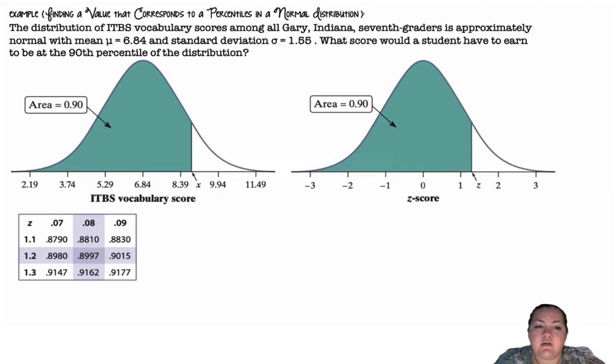Alright, so finding the value that corresponds to a percentile in a normal distribution. The distribution of ITBS vocabulary scores among all Gary, Indiana 7th graders is approximately normal with a mean of 6.84 and a standard deviation of 1.55. What score would a student have to earn to be at the 90th percentile of the distribution?